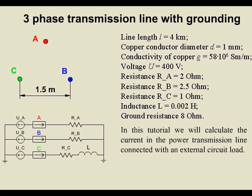Three-phase transmission line with grounding. Line length: 4 kilometers. Copper conductor diameter: 1 millimeter. Conductivity of copper: 58 times 10 to the 6 Siemens per meter. Voltage: 400 volts.